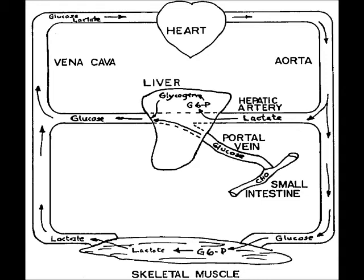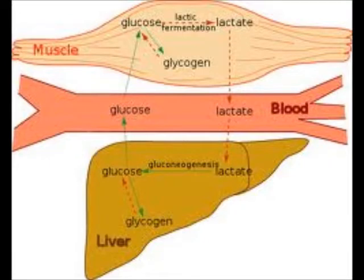Approximately 75% of the lactate in circulation is taken up and oxidized by type 1 and cardiac muscle fibers. The remaining approximate 25% of the lactate in circulation is taken up by the liver, entering a process known as the Cori Cycle. Once in the liver, lactate goes through gluconeogenesis and becomes glucose, which may circulate in the blood or be stored as glycogen.